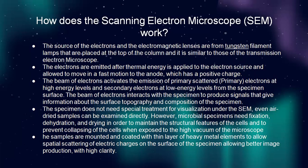Next, I will explain how the scanning electron microscope works. The source of electrons and the electromagnetic lenses — from tungsten filaments placed at the top of the column — are similar to those of the transmission electron microscope. The electrons are emitted after thermal energy is applied to the electron source and allowed to move at fast speed towards the anode, which has a positive charge. The beam of electrons activates the emission of scattered primary electrons at high energy levels and secondary electrons at low energy levels from the specimen surface. The beam interacts with the specimen to produce signals that give information about the surface topography and composition.